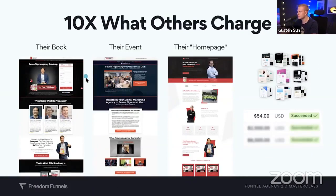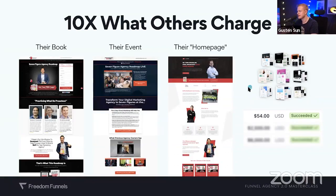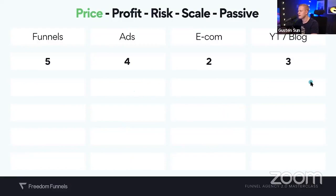Here's why you can charge 10 times more than other people. I have funnel templates — one client paid $54 to get the templates and then bought additional funnels as an upsell because they wanted me to do it for them. Book funnel, event funnel, homepage — thousands of dollars. To drive this home: we have five to seven different elements that determine which business model you want. Some of you are doing funnels, some are doing ads, some e-commerce, some YouTube or blogging, some affiliate marketing. Let me break this down so you can see what you should do in 2022.